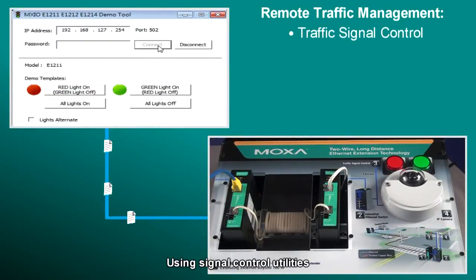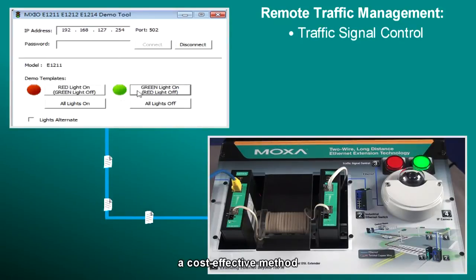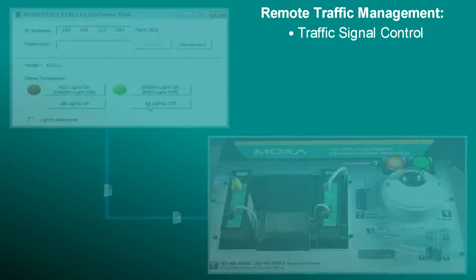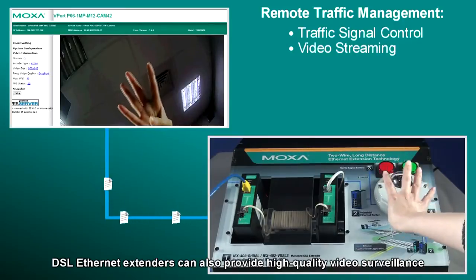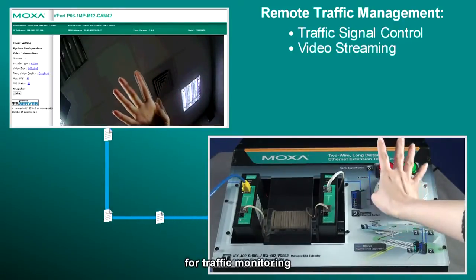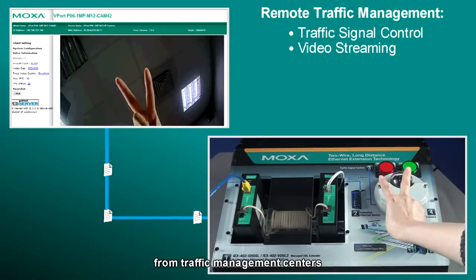Using signal control utilities, DSL Ethernet extenders can provide operators a cost-effective method for remote transmission and traffic management. DSL Ethernet extenders can also provide high-quality video surveillance for traffic monitoring from traffic management centers.